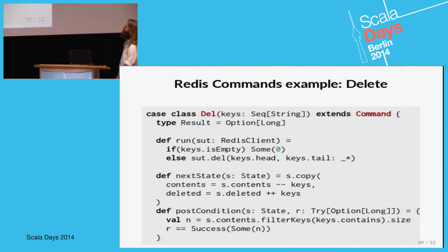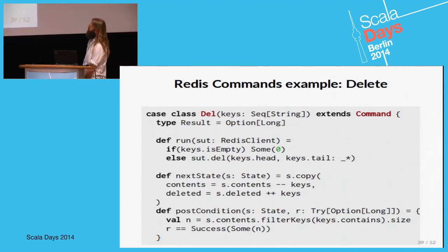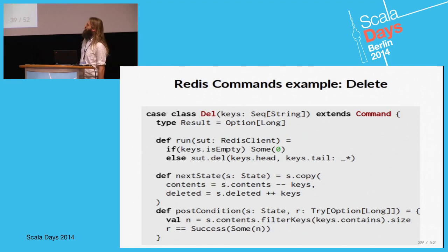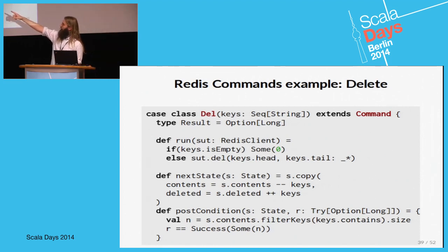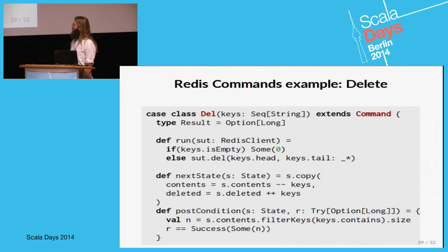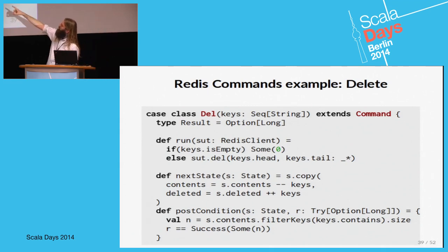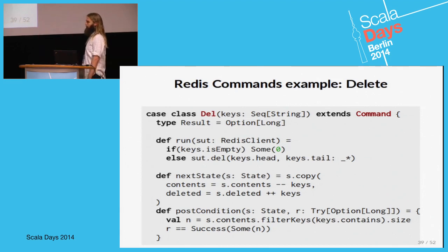The delete command is not difficult either. It takes a list of keys to delete — the Redis client I'm using can also take a list. It updates the state by removing the keys from the current contents and adding the keys to the deleted ones. The post-condition checks that the value returned from the Redis client delete method — which returns the number of keys deleted — equals the number of keys that existed in our state.